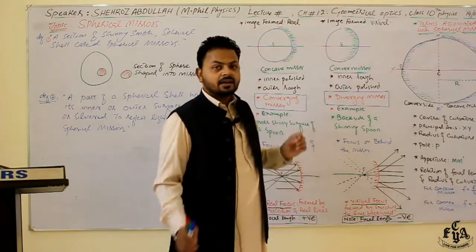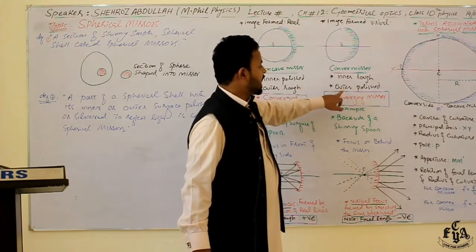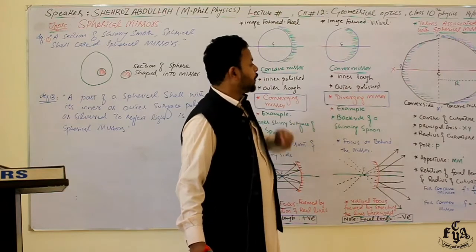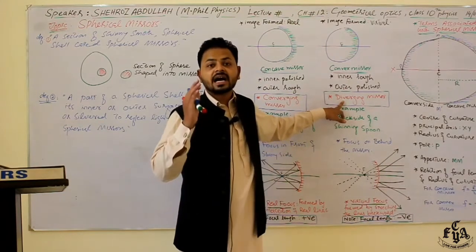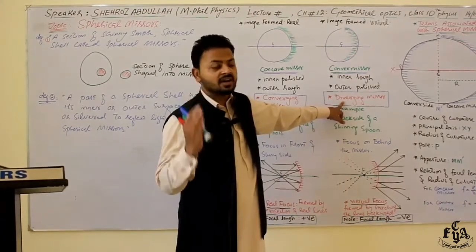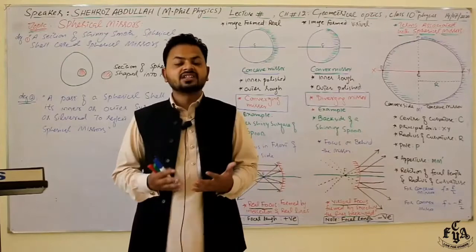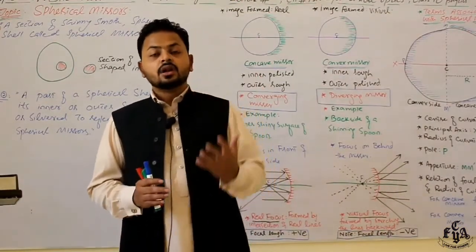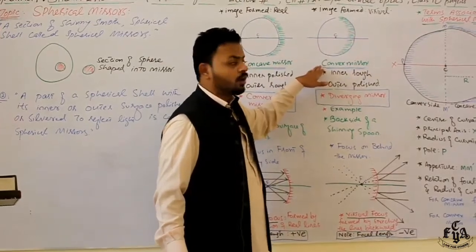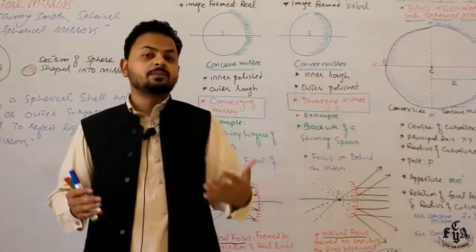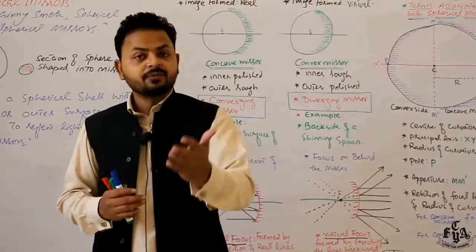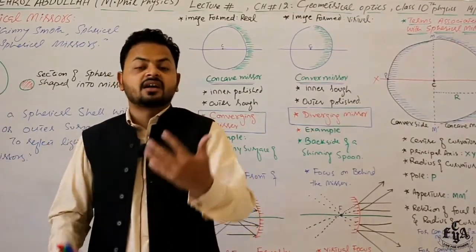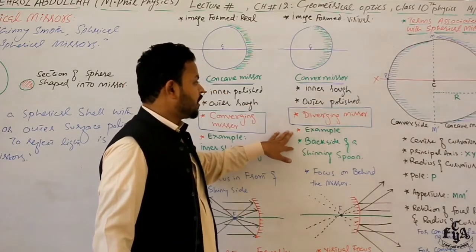Convex mirrors are the opposite of concave mirrors. In convex mirrors, the inner side is rough and the outer side is polished. Convex mirrors are also known as diverging mirrors because they have the ability to spread or diverge the beam of light. When a parallel beam of light falls on the convex mirror, after reflection the rays spread in different directions — they are diverged in multiple directions.